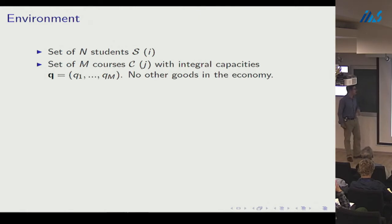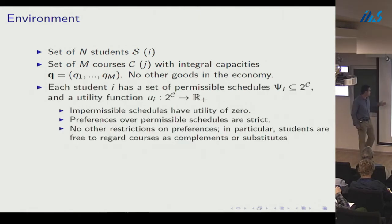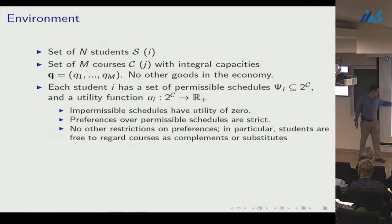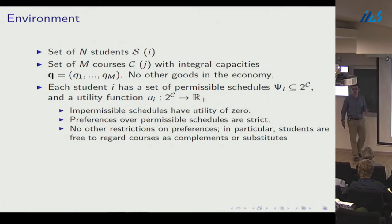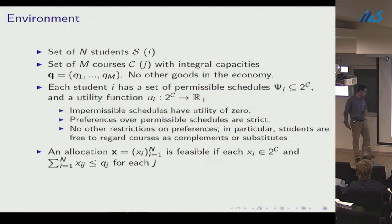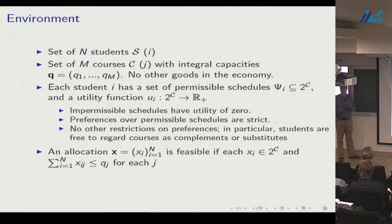Impermissible schedules have utility zero; preferences over permissible schedules are strict. No other restrictions are placed on preferences — in particular, courses may be complements or substitutes. A schedule is a vector of zeros and ones (I either take a course or I don't). An allocation x assigns to each student a set of courses; an allocation is feasible if it satisfies capacity constraints.